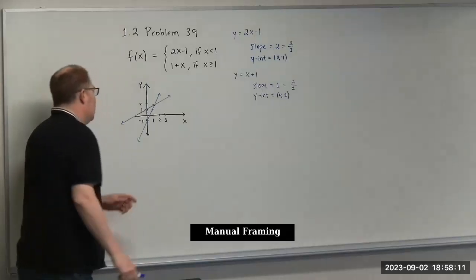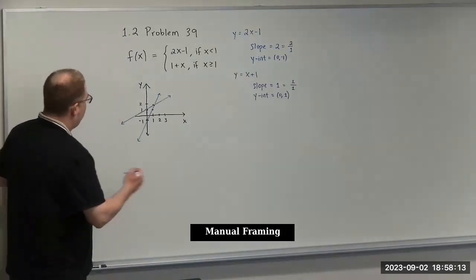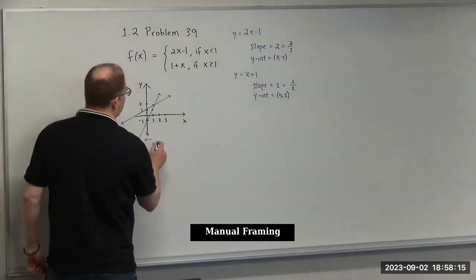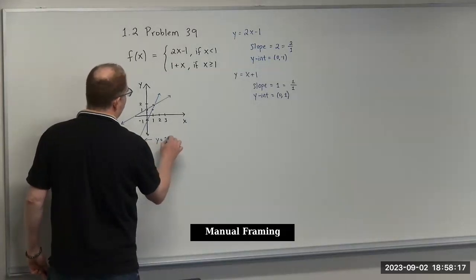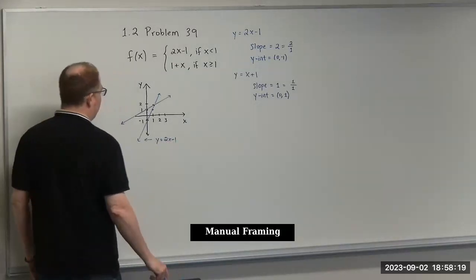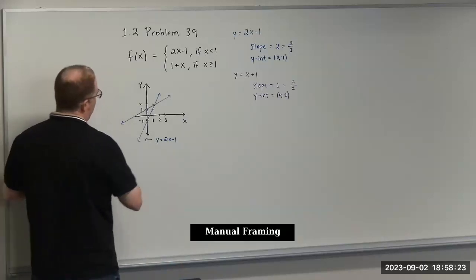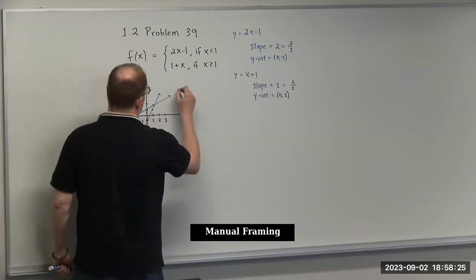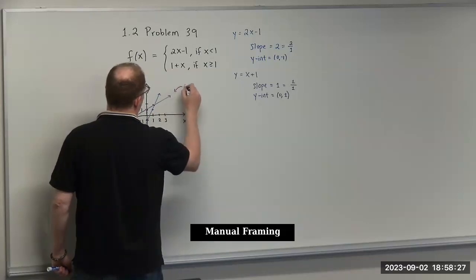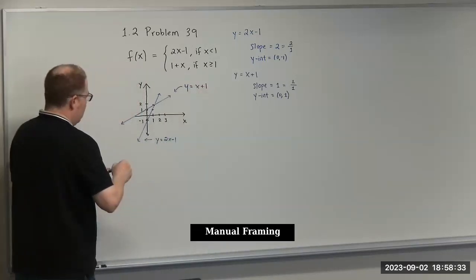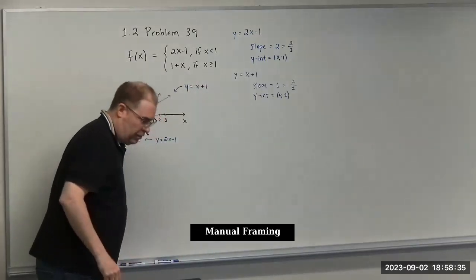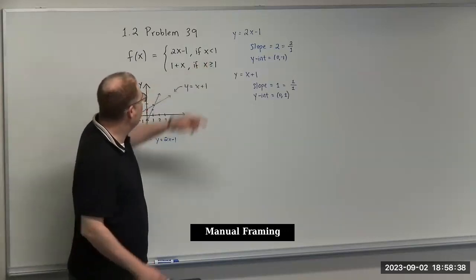Here we have, this is going to be y equals 2x minus 1. And then we have the other one, x plus 1. Now what we have to do is go back and look at our restrictions.